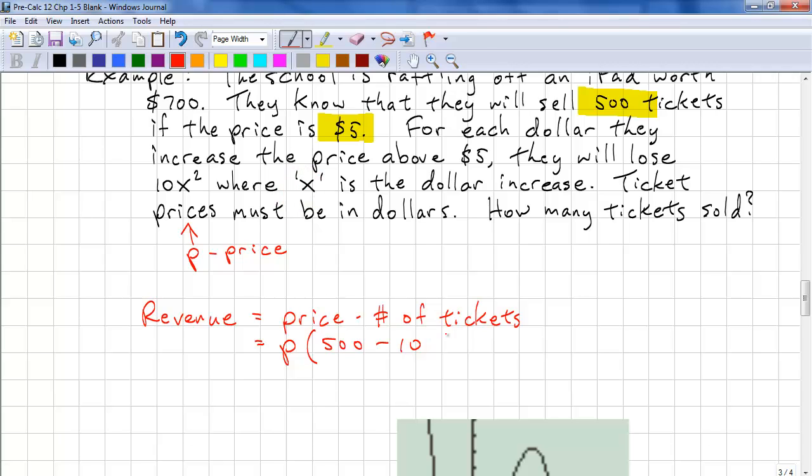Okay, so x is the dollar increase. And the dollar increase is P minus 5 squared. It's the price above $5. For every dollar, we're going to lose the squared times 10. So that's our formula.